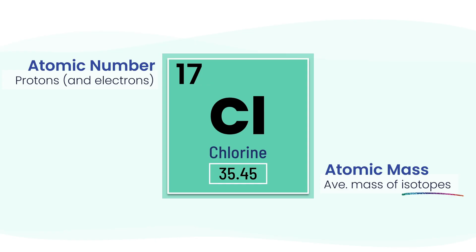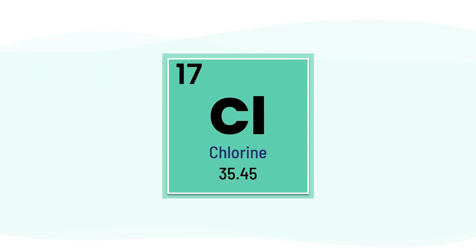Some have more neutrons than others, and those versions are called isotopes. Most chlorine atoms you'll find in nature are either chlorine-35 or chlorine-37. Both of them have 17 protons, because that's what makes them chlorine in the first place.